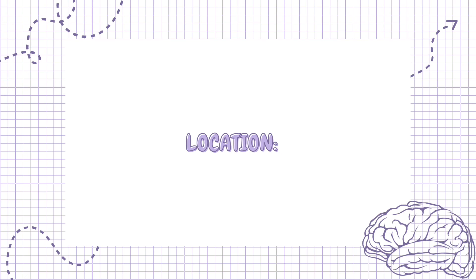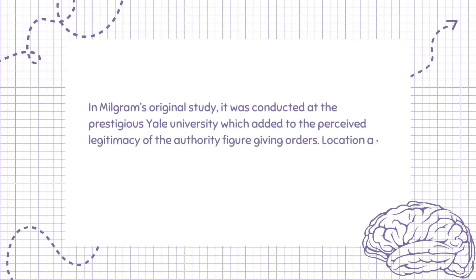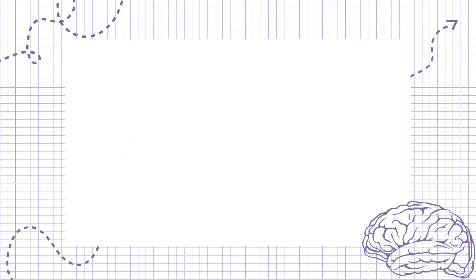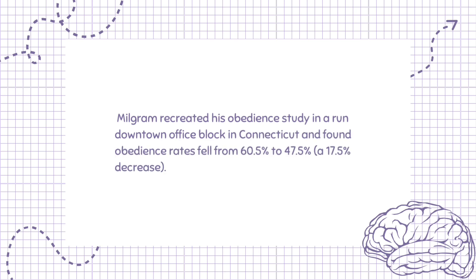Location. In Milgram's original study, it was conducted at the prestigious Yale University, which added to the perceived legitimacy of the authority figure giving orders. Location and environment were found to affect the amount of perceived legitimate authority. Milgram recreated his obedience study in a run-down downtown office block in Connecticut and found obedience rates fell from 60.5% to 47.5%, a 17.5% decrease.